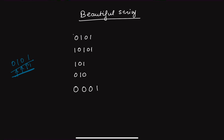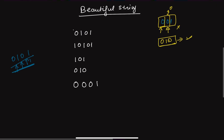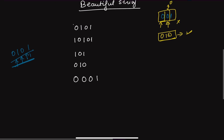The problem says you have to make that string beautiful. By beautiful string, I mean that the characters should be alternating. For example, if you have '001,' the characters at position zero and position one are both zero — they are the same, so this is not beautiful. If I flip the character at the first position, the string becomes alternating, and now this string is beautiful.